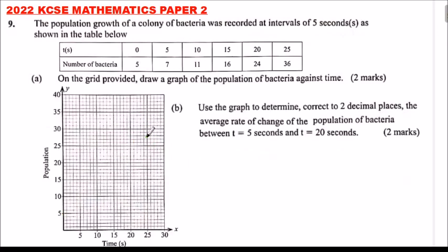This is question number 9, 2022 KCSE Mathematics Paper 2. The population growth of a colony of bacteria was recorded at intervals of 5 seconds as shown in the table. We have time values of 0, 5, 10, 15, 20, and 25 seconds, with number of bacteria being 5, 7, 11, 16, 24, and 36 respectively.